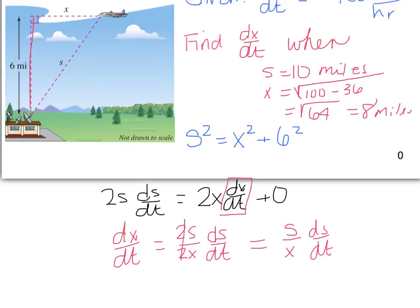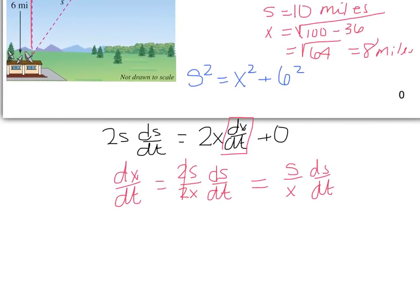Now I have values for s, x, and ds/dt, so I'm going to plug those in right now. And when we plug those in, we end up with dx/dt equals s, which was 10 miles, divided by x, which is 8 miles, times ds/dt, which we know was a negative 400 miles per hour.